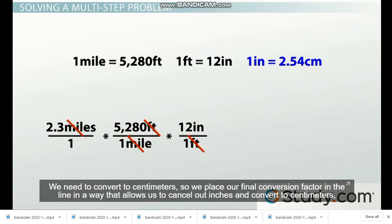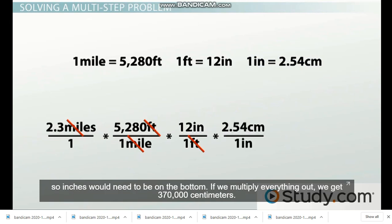We need to convert to centimeters, so we place our final conversion factor in the line in a way that allows us to cancel out inches and convert to centimeters. So inches would need to be at the bottom. If we multiply everything out, we get 370,000 centimeters.